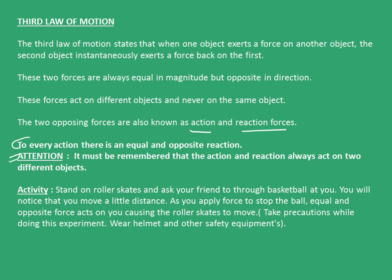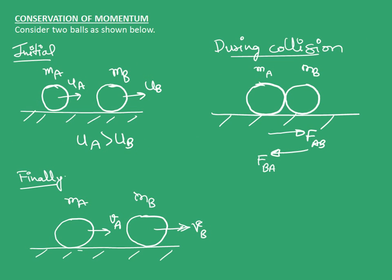Take precautions while doing this experiment. Do wear helmets and other safety equipment. Now, let's move on to conservation of momentum, which is the final topic in this chapter. Consider two balls as shown below. Initially, ball A is moving with velocity UA towards ball B, which is moving with velocity UB.